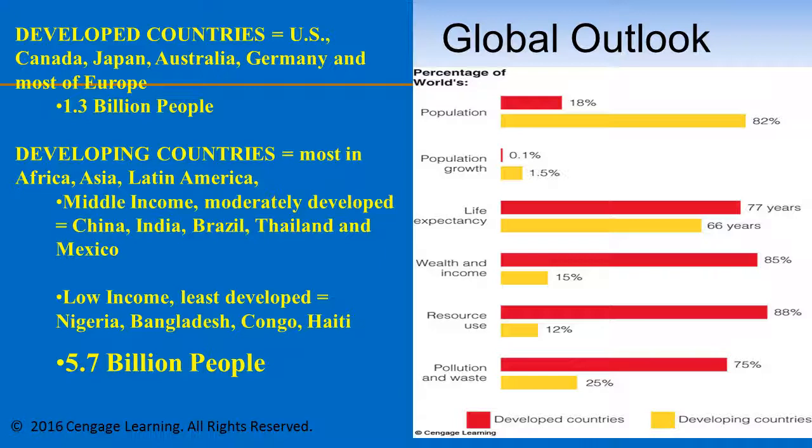Countries that fall in the category of developed countries include the United States, Canada, Japan, Australia, Germany, and most of Europe — totaling about 1.3 billion people. Countries that fall under the category of developing are most of the countries found in Africa, Asia, and Latin America. We can actually break this into two categories.